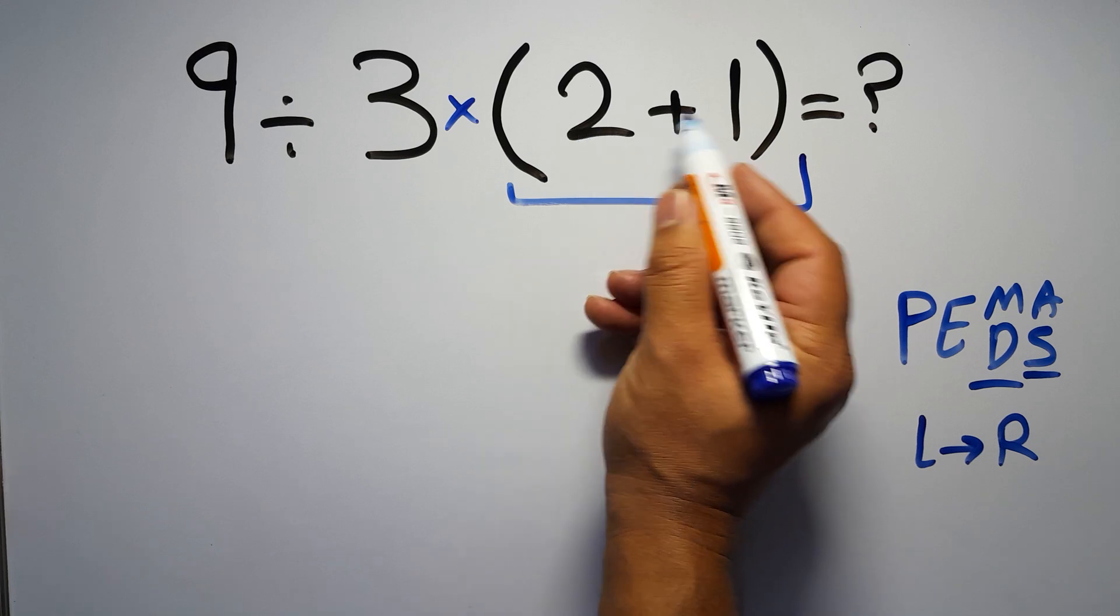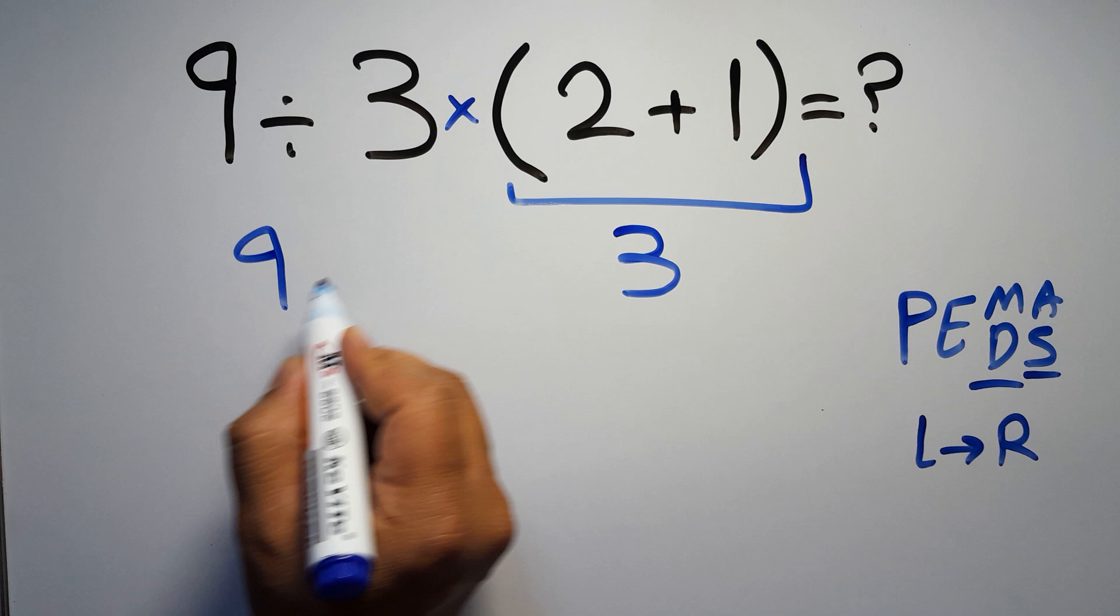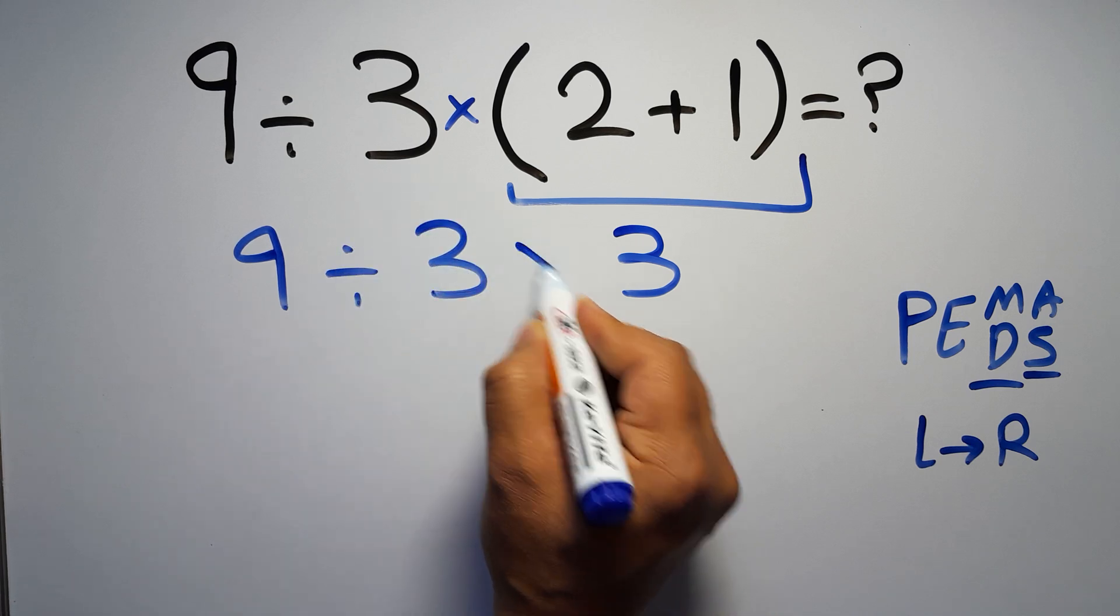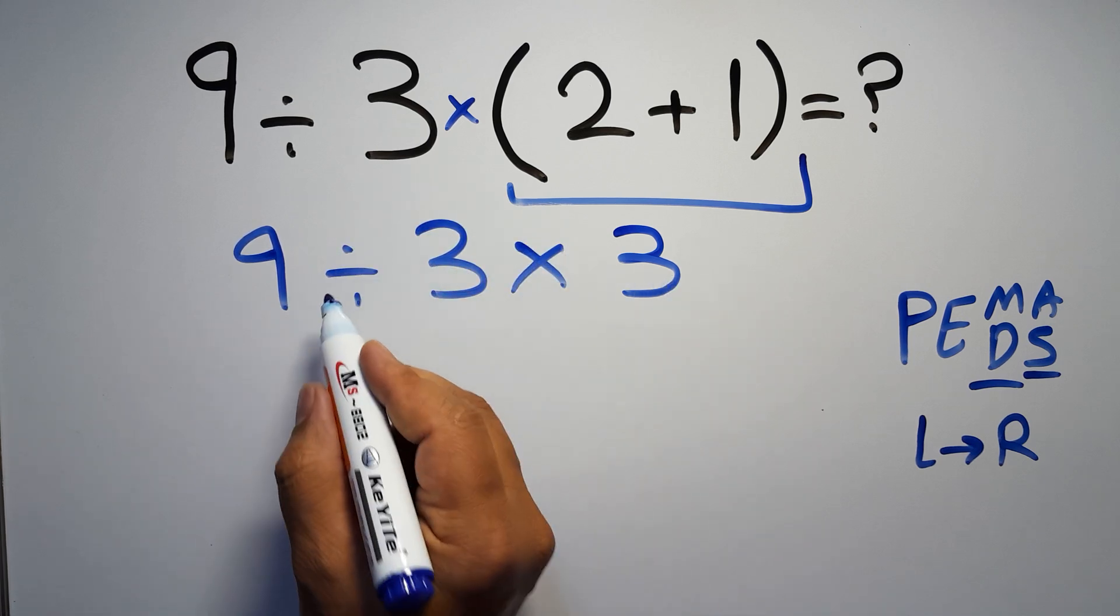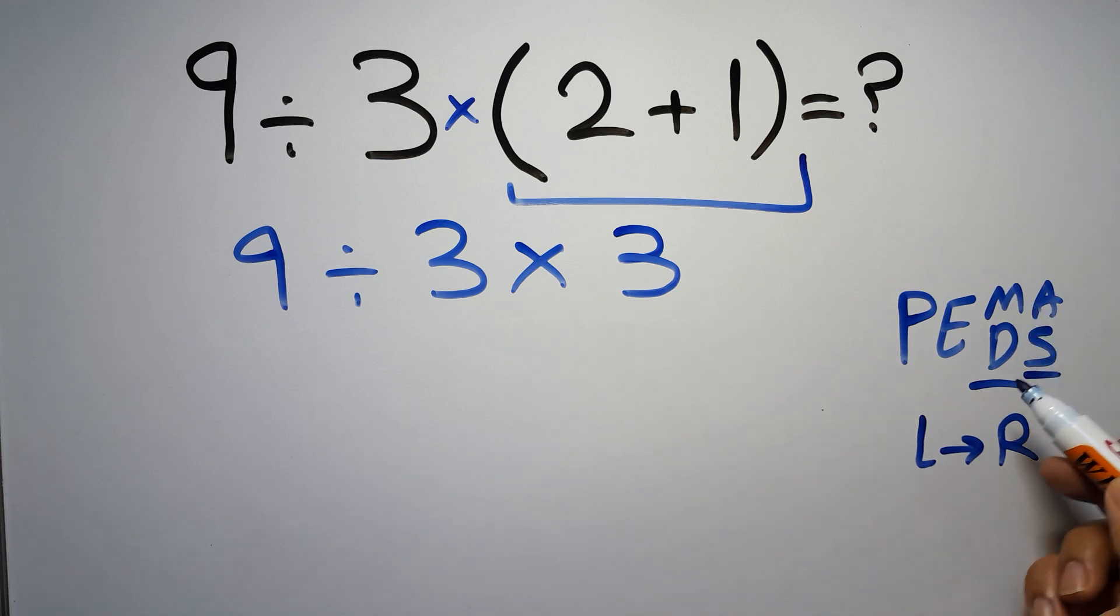inside this parentheses we have 2 plus 1 which equals 3, so 9 divided by 3 times 3. Now we have one division and one multiplication. As I said, multiplication and division have equal priority and we have to work from